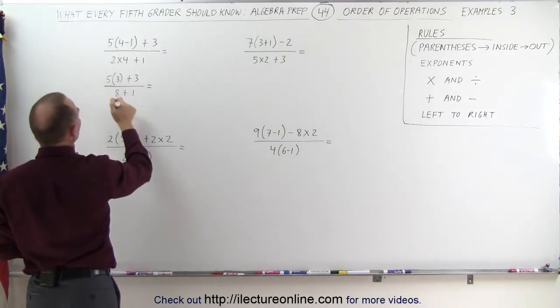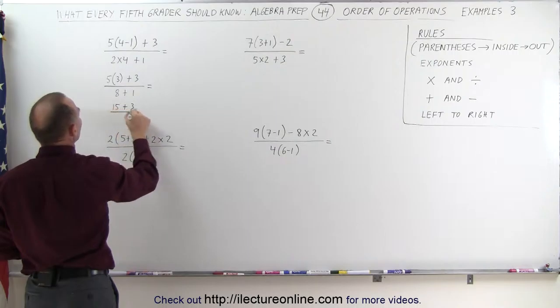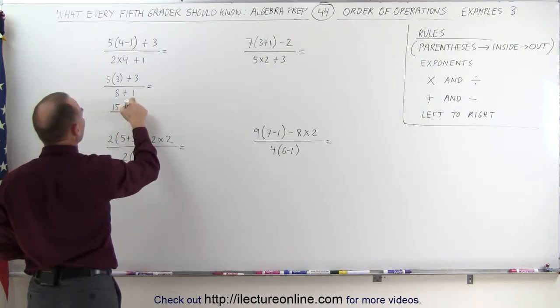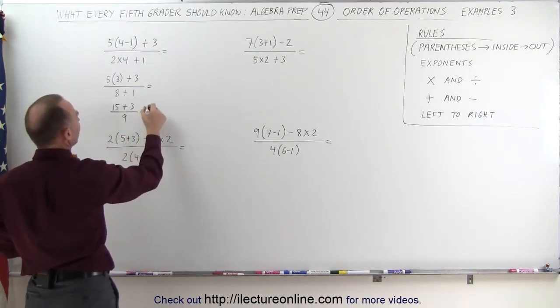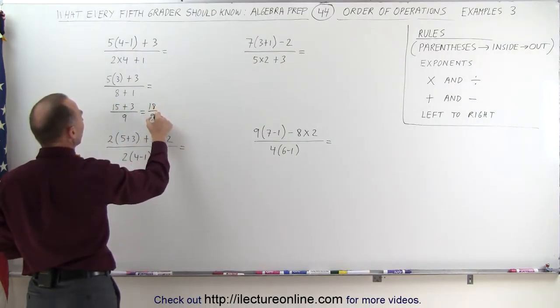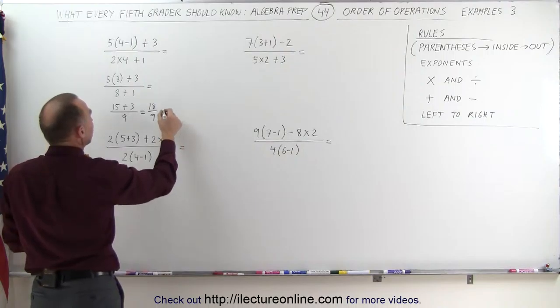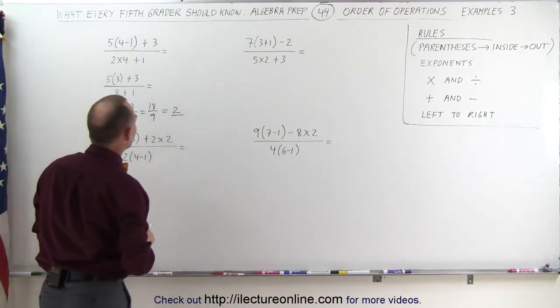Next we can multiply this, 5 times 3 is 15, plus 3 in the numerator, divided by 8 plus 1 in the denominator, that gives us 9. Now we can add the numerator, 15 plus 3 is 18, divided by the denominator is 9, and 9 goes into 18 exactly 2 times, and that's the answer.